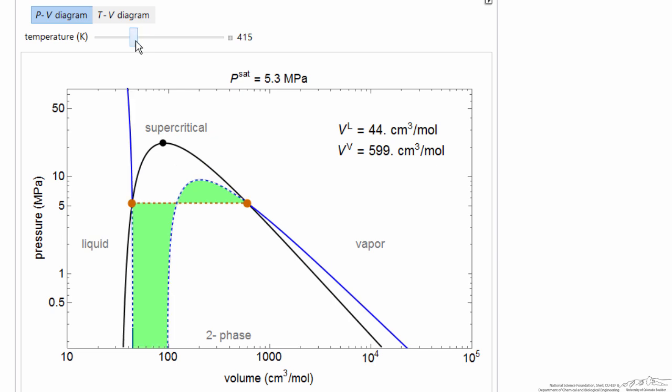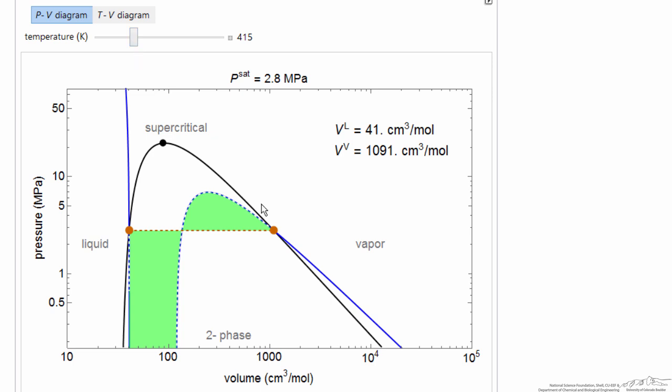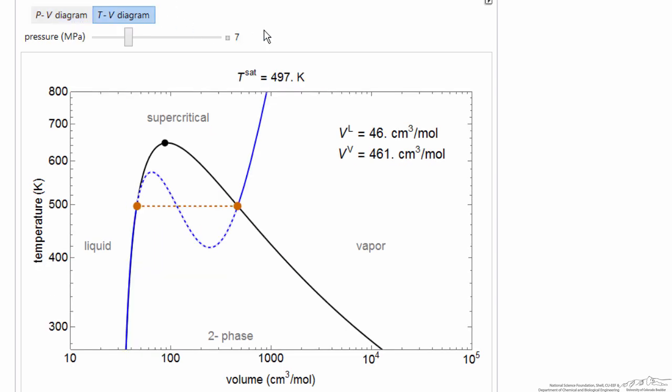And as we lower the temperature, we lower the saturation pressure, the equilibrium pressure where the horizontal line is located.